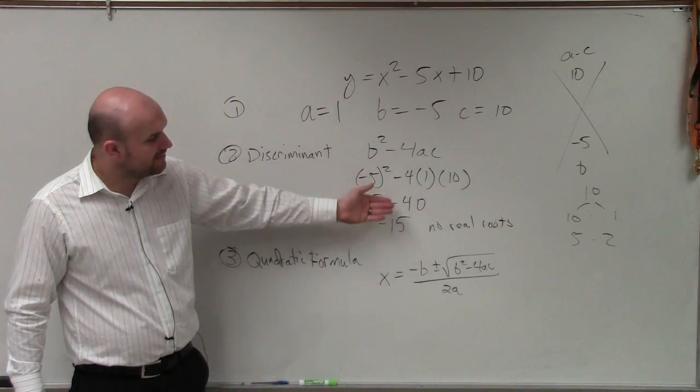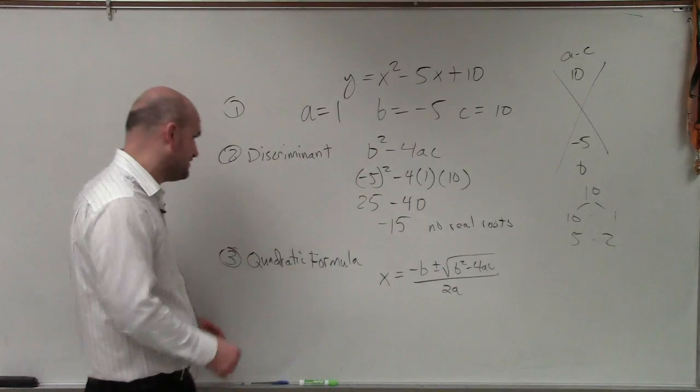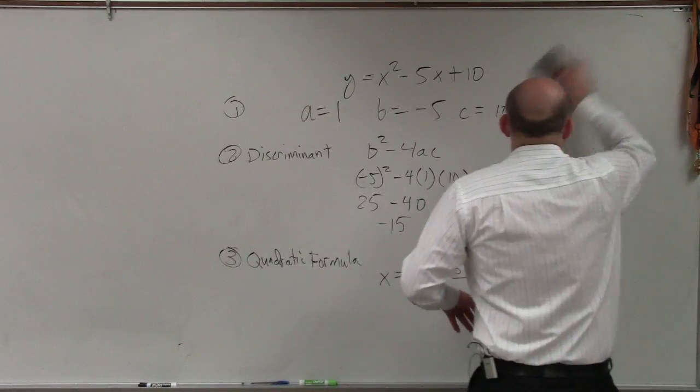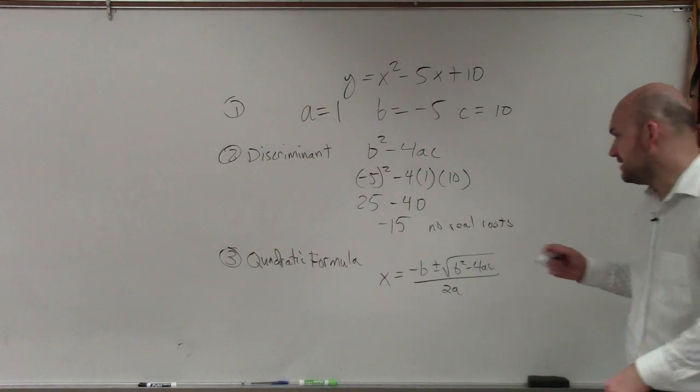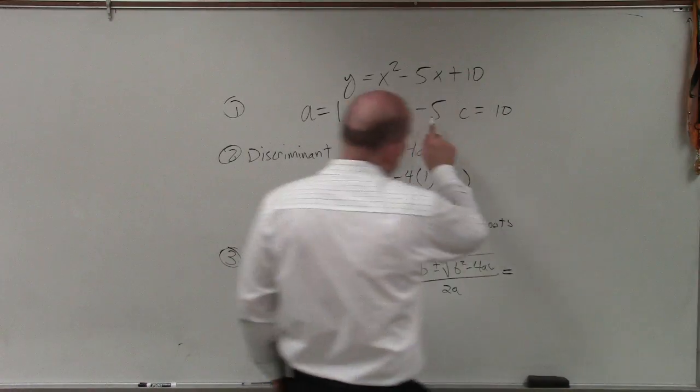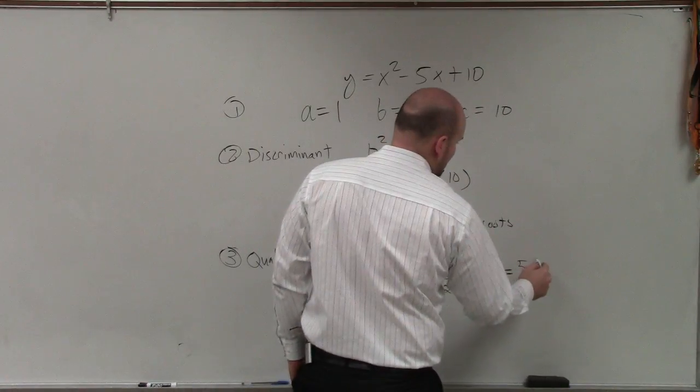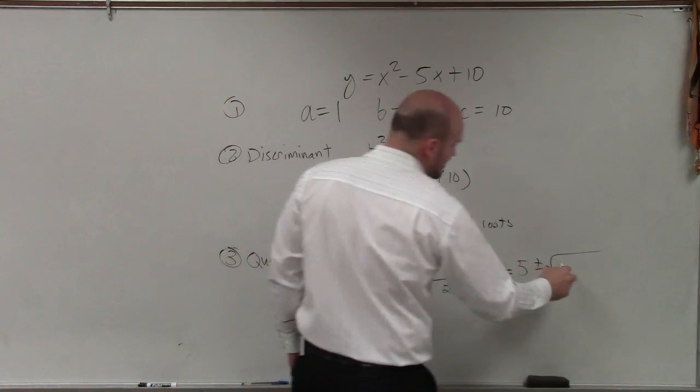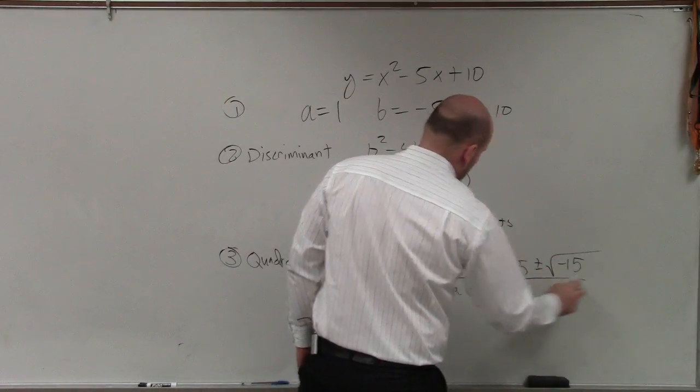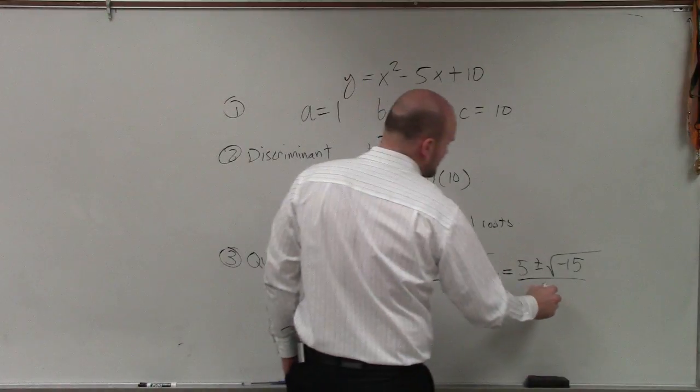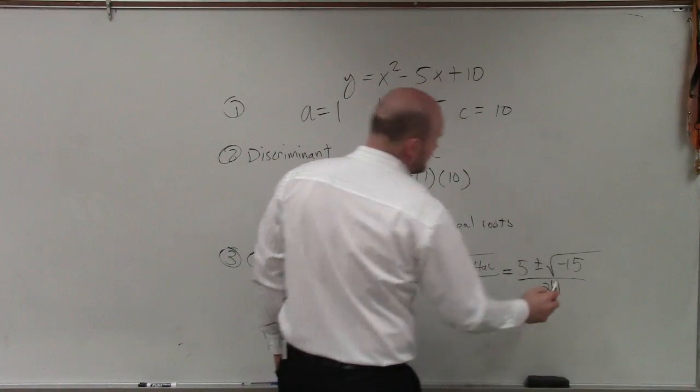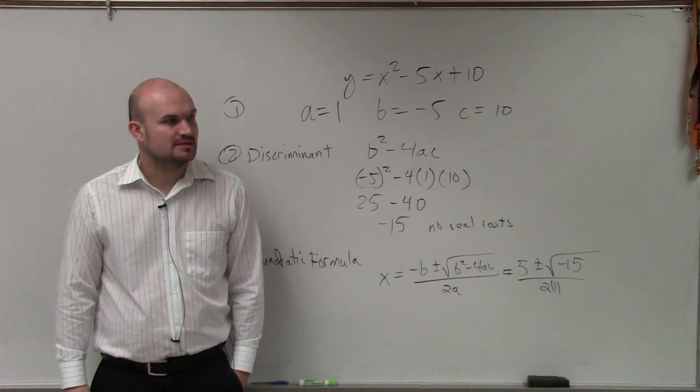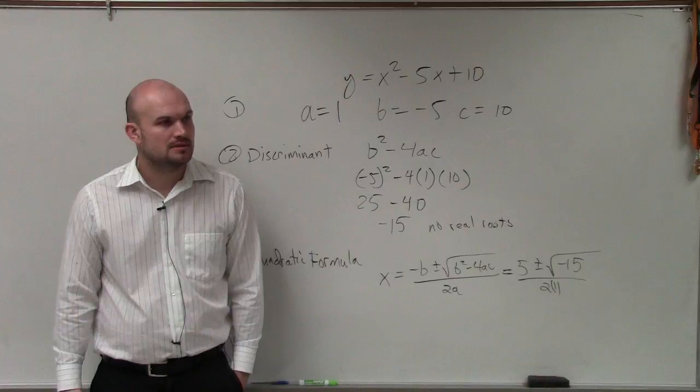So we now have our discriminant. So now to figure out the values, all I'm simply going to do is plug in the values for a, b, and c. So I have x equals opposite of b. Well, b is negative 5, so now it's 5 plus or minus the square root of negative 15, I already found that value, divided by 2 times a, which is 2 times 1. So does everybody see what I did there?